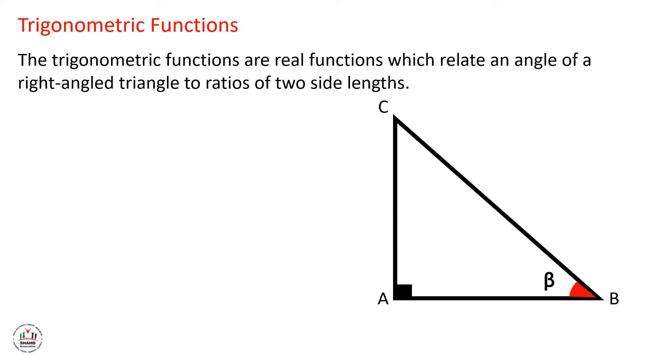Here we have a right triangle ABC and we have an angle beta. The side AB represents an adjacent side for angle beta, and the side AC is the opposite side for this angle. And we know that the hypotenuse is the opposite side for a right angle.